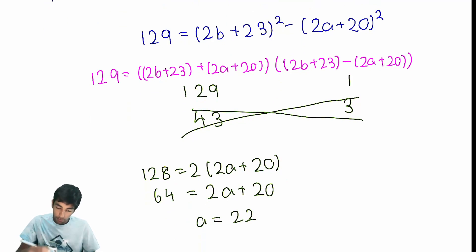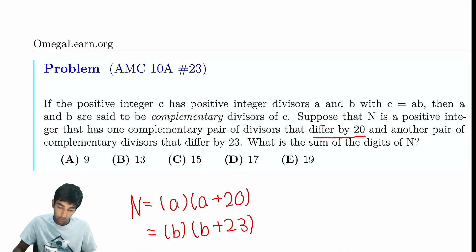And now, we can just solve by just plugging it in. So we plug in 22 over here. Well, we already know this whole thing is 64, right? So this whole thing must be 65. And therefore, B is 21. So A is 22, B is 21.